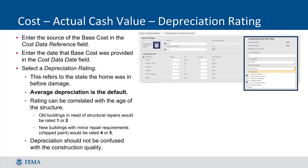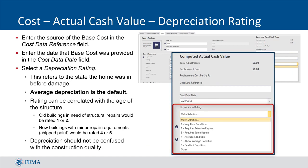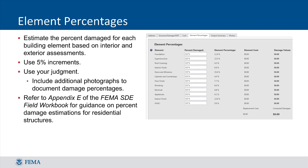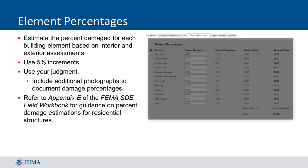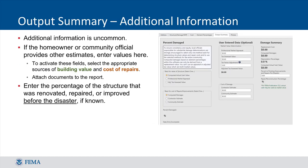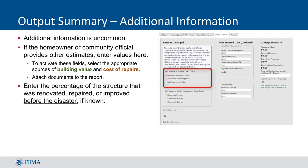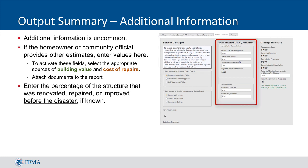The last required data field in the Cost tab is the Depreciation Rating. You have six preset depreciation percentages to choose from, or you can select Other and provide a percentage along with an explanation. The Element Percentages tab is where you record the estimated percent damage for each structural element. If the Damage Undetermined box was checked, all data fields will be grayed out in the Element Percentages tab. The Output Summary requires no data entry while in the field; it displays the structure's percent damage based on data entered in the Structure, Cost, and Element Percentages tabs. The default method is computed using actual cash value, while other methods require additional data such as a contractor's estimate or real estate appraisal.